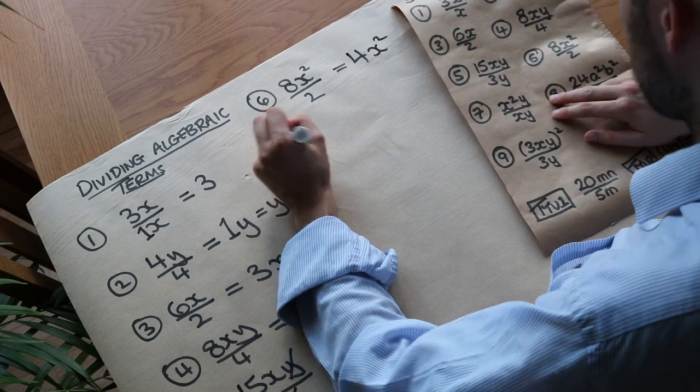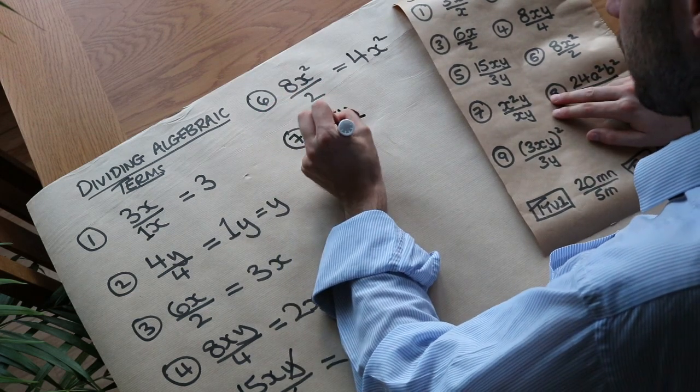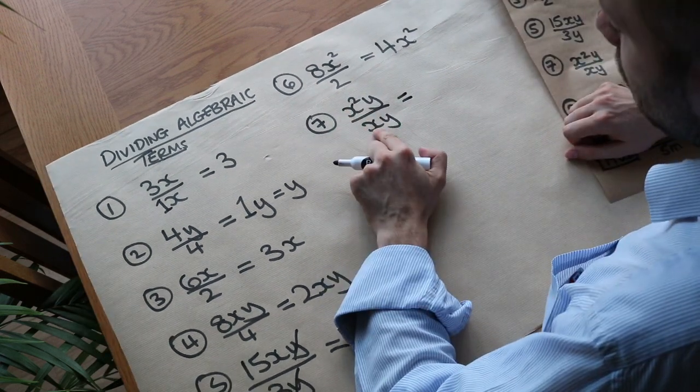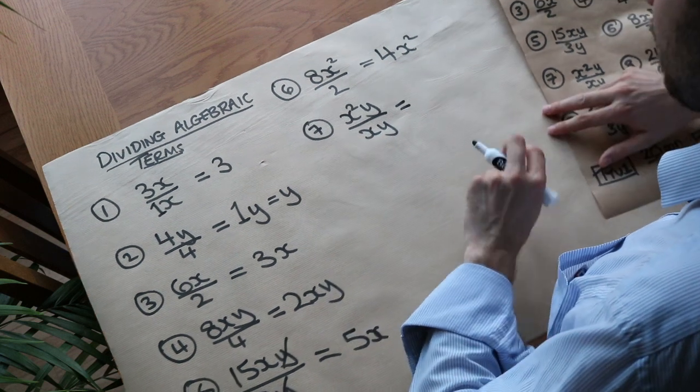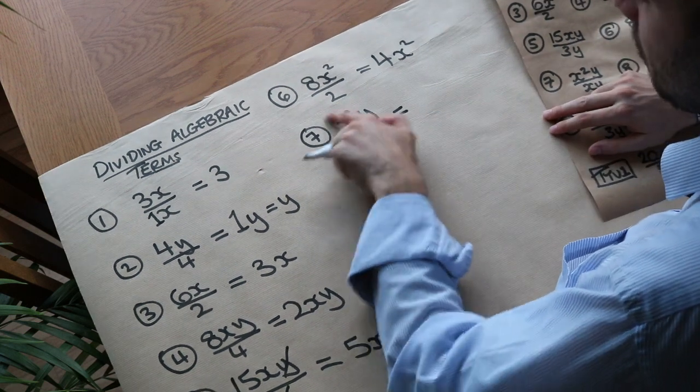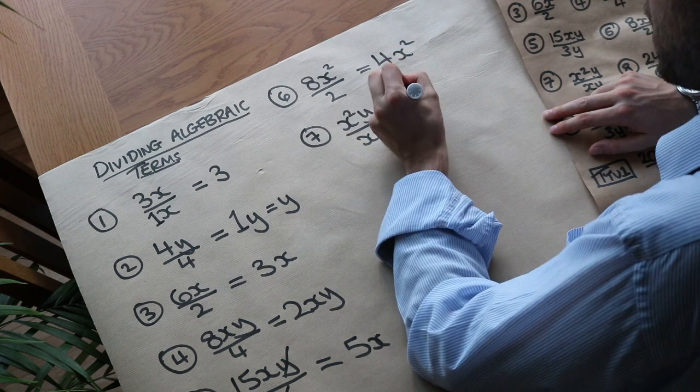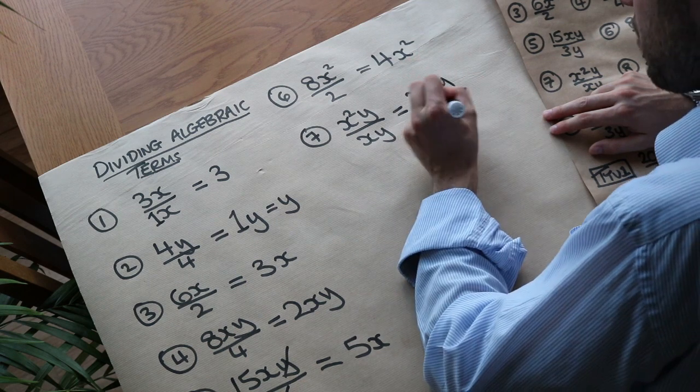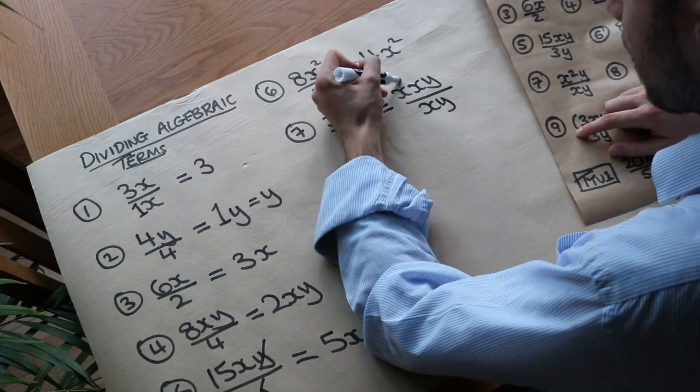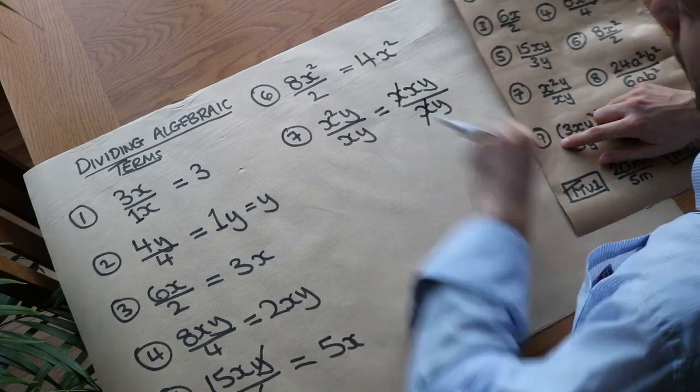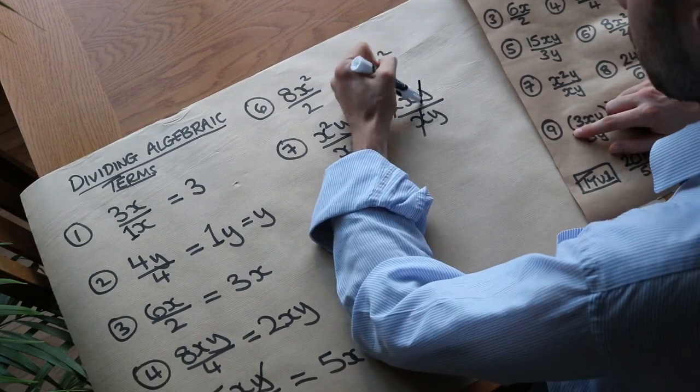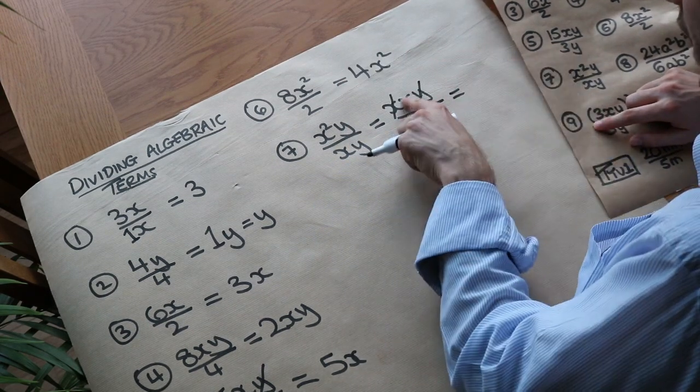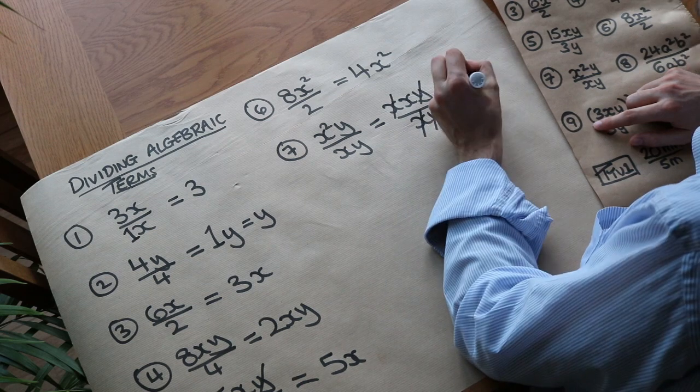Now 7, this is where it gets more interesting. So we've got x squared y divided by xy. Now we need to do x squared divided by x. Now to help you see what happens there, we could always write this out explicitly, what's being multiplied together. Now x squared means x times x, doesn't it? So I'm just going to write x twice. And then we've got xy at the bottom. So we've got this x divided by x. They cancel, but we still have that x left at the top. And these y's cancel, one of those y's cancel. And then effectively, all we've got left now at the top is x. And we've got nothing left that we're dividing by, so it's just x.